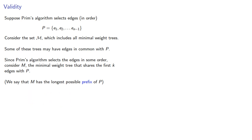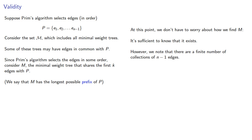Note that at this point we don't have to worry about how we find M, it's sufficient to know that it exists, but it's good practice to ask yourself how you would find it. And so we know that there are a finite number of collections of n minus 1 edges, so there are a finite number of trees, and we can go through them to find the minimal weight ones that gets us our set, then go through these to find M, the set with longest prefix.